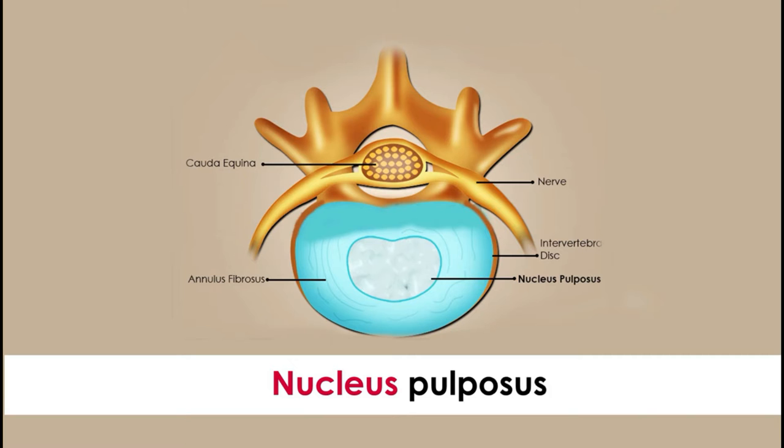Our vertebral column is made up of a number of small bones — each bone is known as a vertebra. In between two vertebrae, we have a cushion-like material known as a disc or intervertebral disc. It has an overlying layer like the leather over a cushion, and a center portion called the nucleus pulposus, which is like the cotton layer within a cushion.